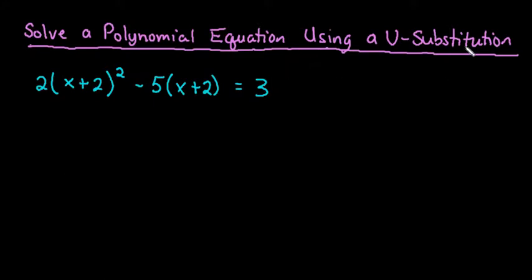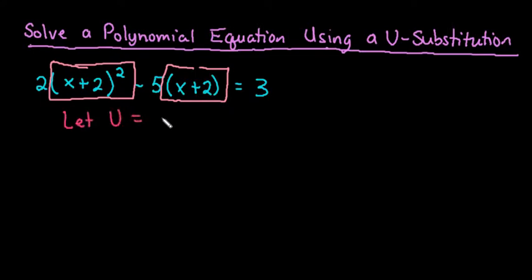The reason that I can use a u-substitution for this one is because of the fact that this term right here, if I were to square it, it would give me this term right here. So really what we have is we have a quadratic equation that we can make simpler by replacing x plus 2 with a different variable. So for a u-substitution, what we are going to do is we're going to let u equal the middle term x plus 2.